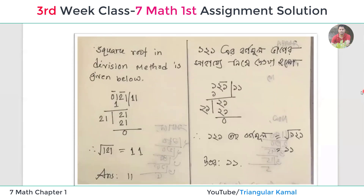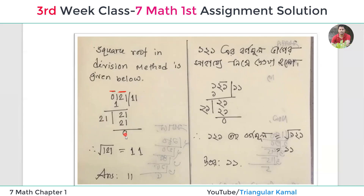Now using the division method: we group digits as pairs — '1' on the left and '21' as the next pair. The first number on the top-left is the pair, so 1 squared equals 1, subtraction gives 0. Then bring down 21. One times 21: we find that 11 times 11 equals 121, remainder is 0. That means 121 is a perfect square whose square root is 11.